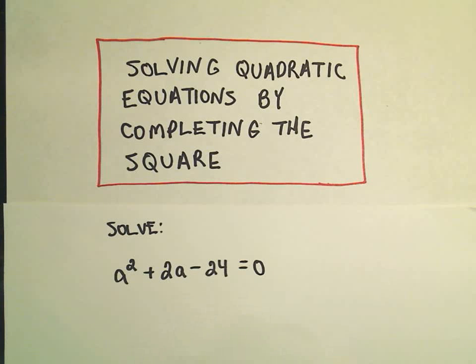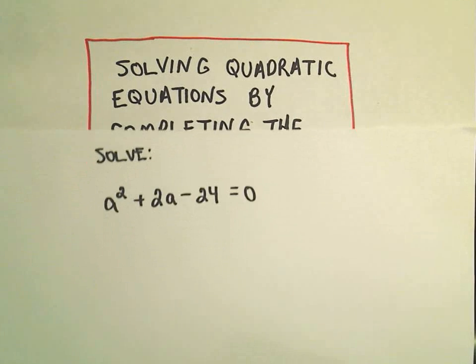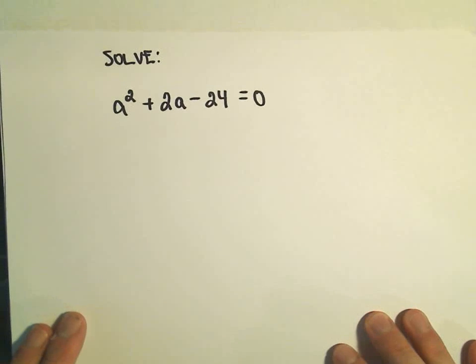Alright, in this video I'm going to do another example of solving a quadratic equation by completing the square. And in this problem we have a squared plus 2a minus 24 equals 0.